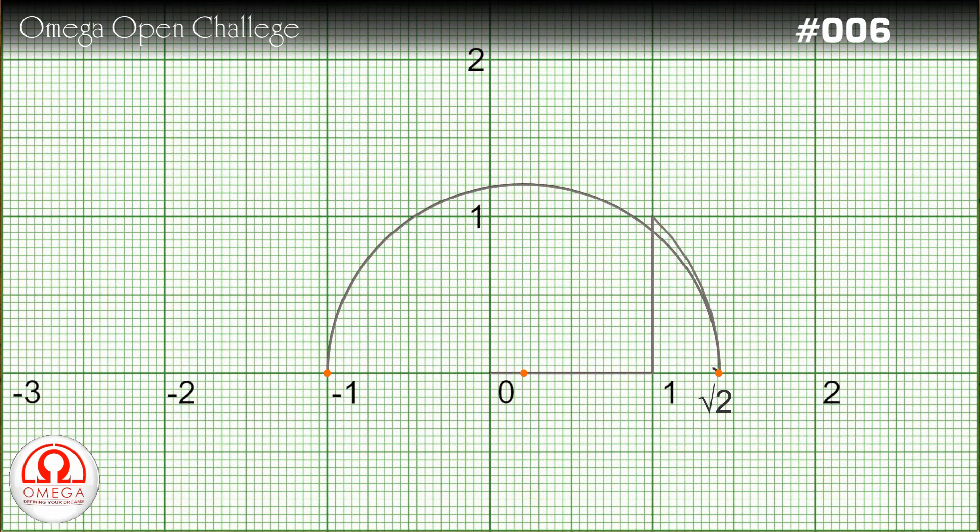We can draw a triangle with base along the diameter and one vertex on the intersection of the circle and y-axis. Since a triangle inscribed in a semicircle is always a right angle triangle, this triangle is a right angle triangle.